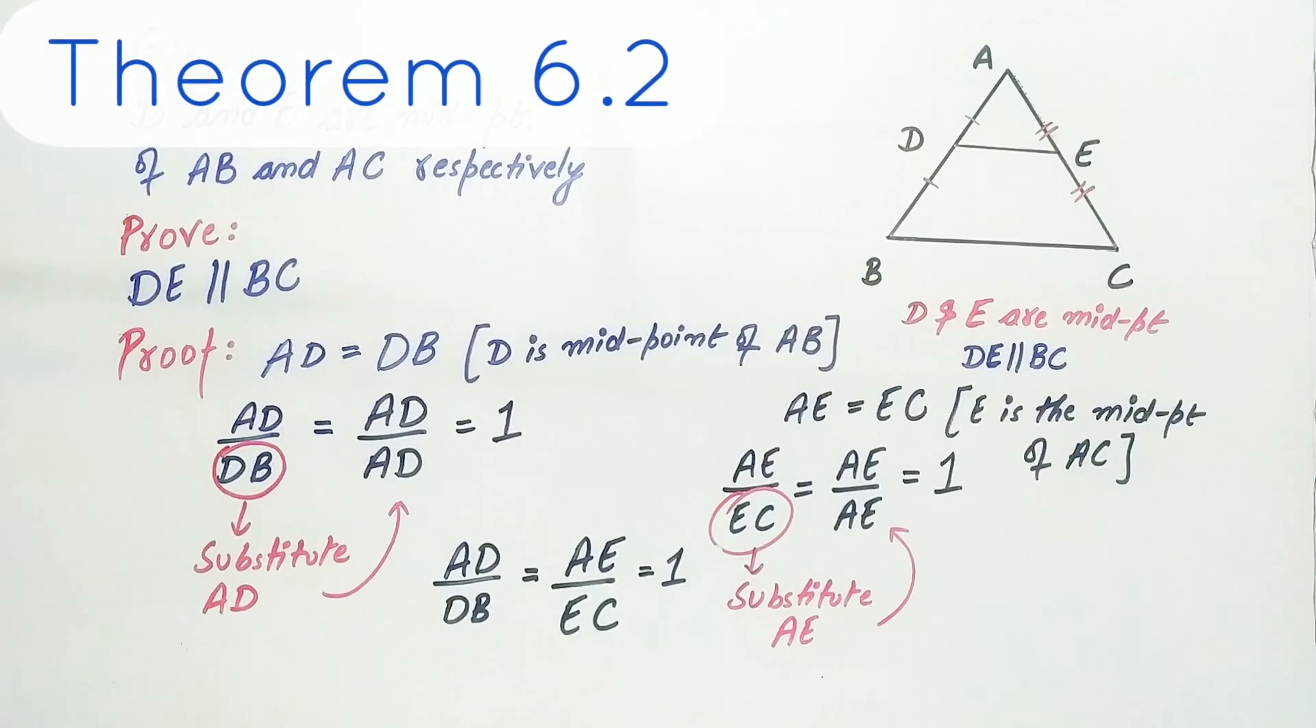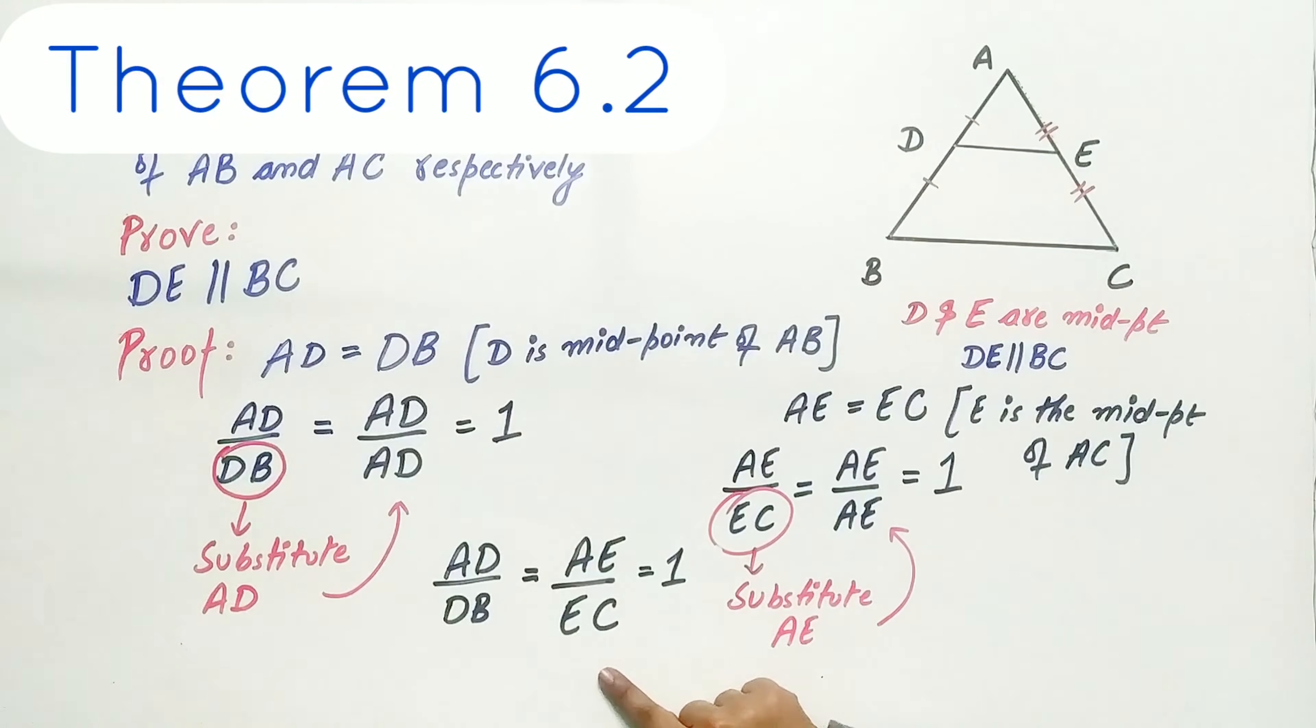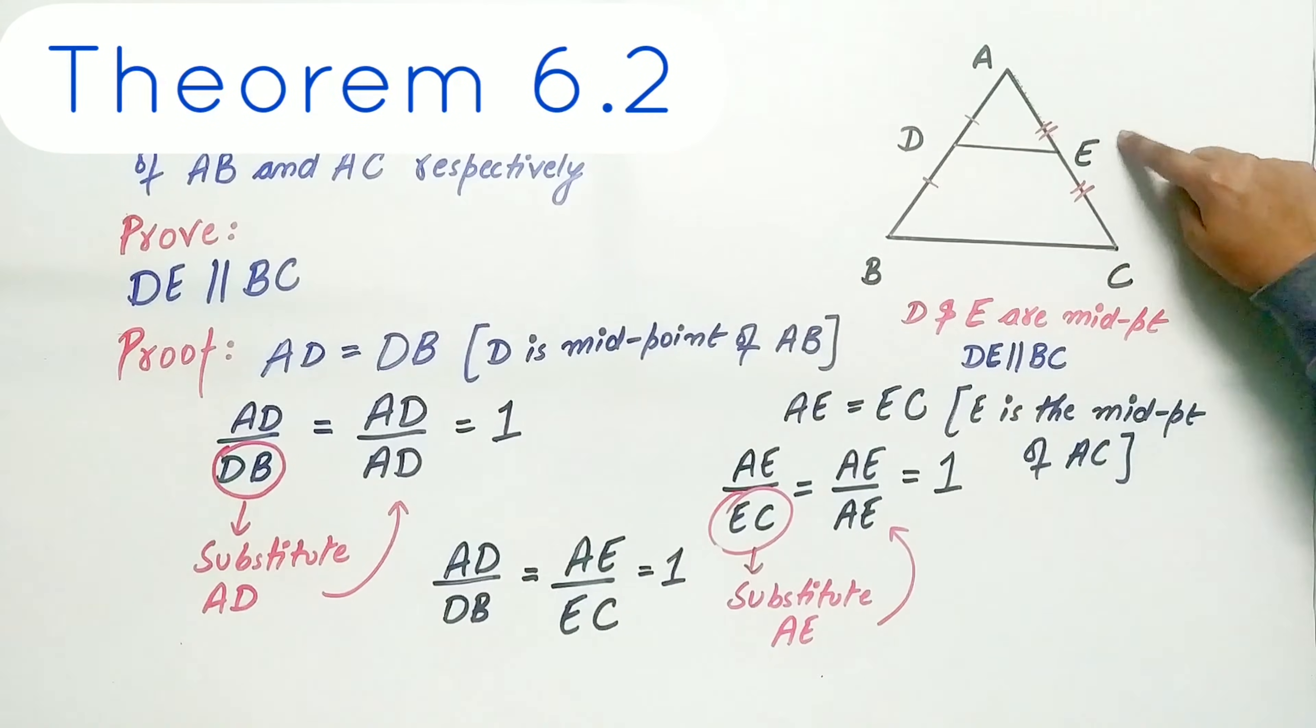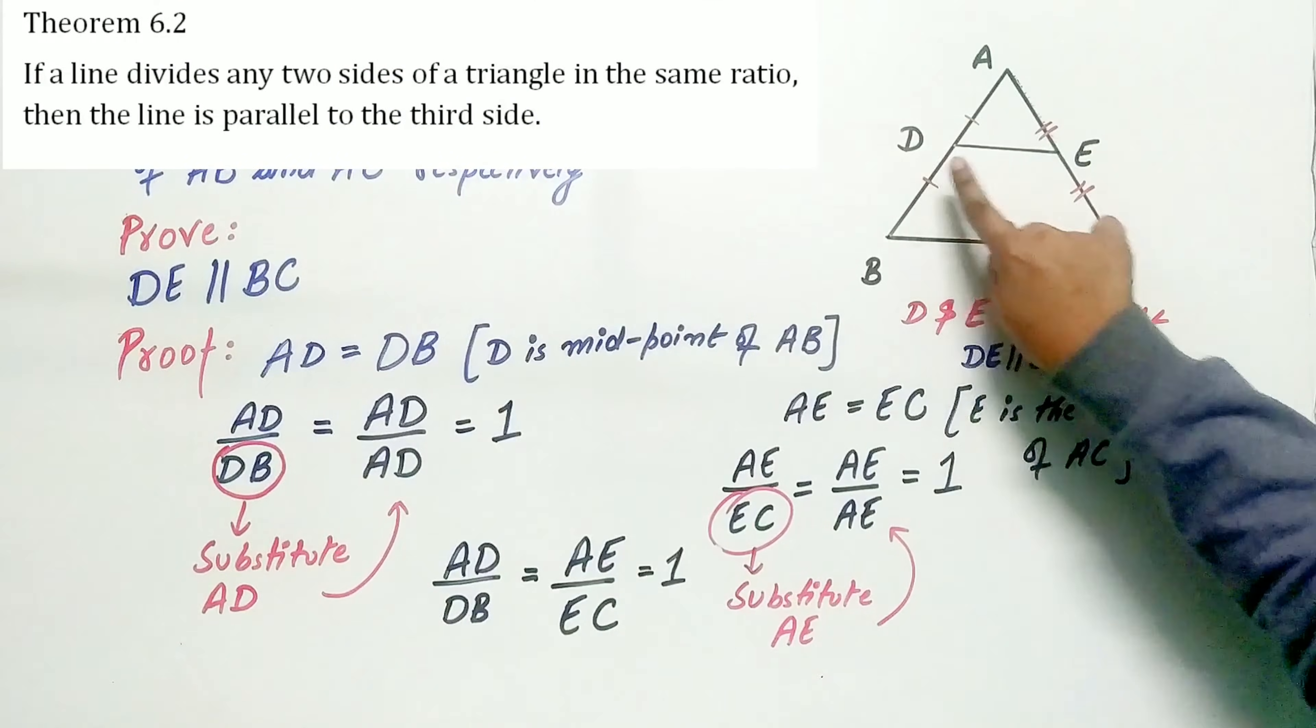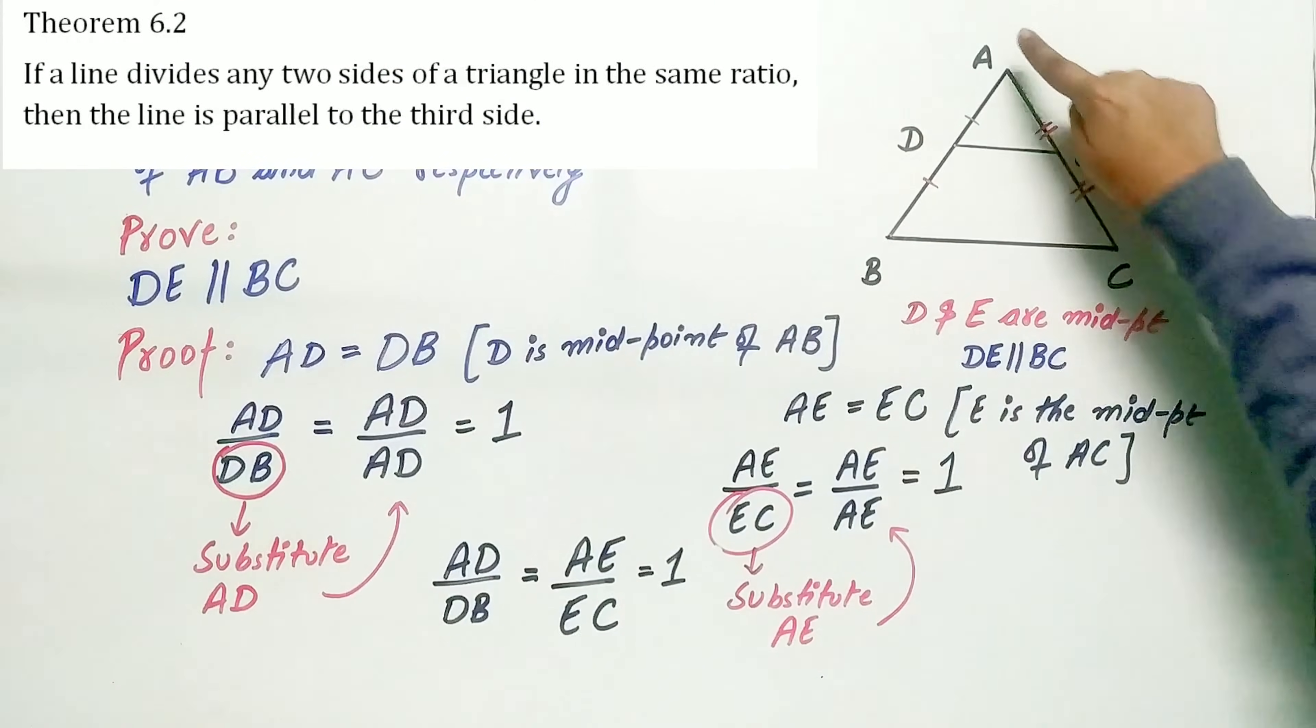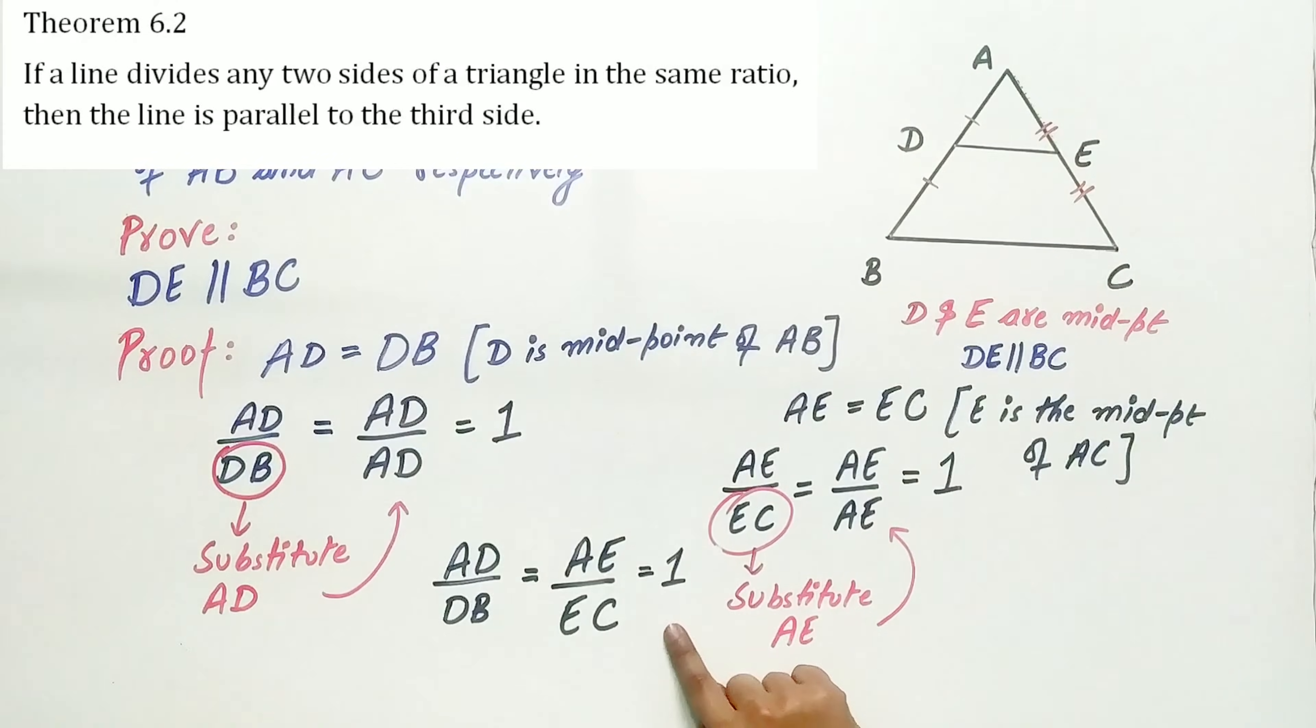And we know if a line divides any two sides of the triangle in the same ratio, then the line is parallel to the third side. And in this case, DE divides the two sides of the triangle AB and AC in the same ratio, that is 1.